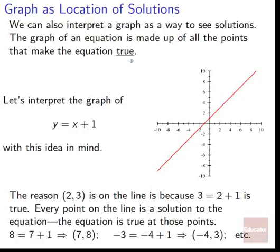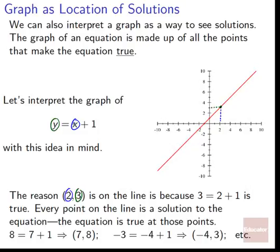Let's interpret the graph of y = x + 1 with this idea in mind. The reason why (2, 3) is on the graph: if we set that into our equation, 3 is y and 2 is x. If we set that up as an equation, 3 = 2 + 1 — yeah, that's actually true. 3 does equal 2 + 1, so because 3 = 2 + 1, it's true and gets to be on the graph. Every point on the line is a solution to the equation. 8 = 7 + 1 gives us the point (7, 8). Negative 3 = negative 4 + 1 gives us the point (−4, −3).